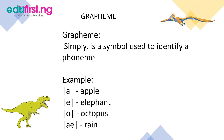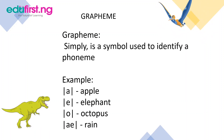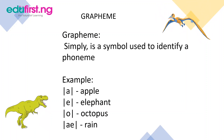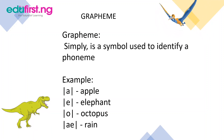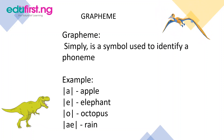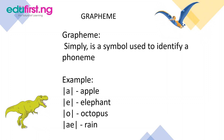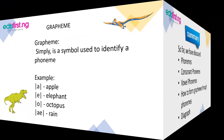We have the /e/ sound for elephant. The /e/ sound is a phoneme, while elephant is a grapheme, which means a word. We have the /o/ sound for octopus. The /o/ sound is a phoneme, while octopus is a grapheme, which means a word. We have the /a/ sound for rain. The /a/ sound is a phoneme, while rain is a grapheme, which means a word.